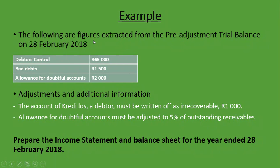We'll see how it works with the help of an example relating to Bad Debts and Allowance for Doubtful Accounts. We are given Adjustments and Additional Information. We are told that the account of Credit Loss and Debtor must be written off as Irrecoverable at R1,000. We are also told that Allowance for Doubtful Accounts must be adjusted to 5% of Outstanding Receivables. The requirement is to prepare the Income Statement and Balance Sheet for the year ended 28 February 2018, but we will focus on Bad Debts and Allowance for Doubtful Accounts.